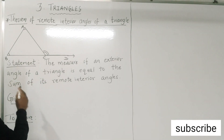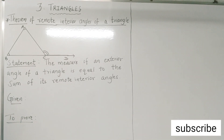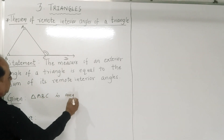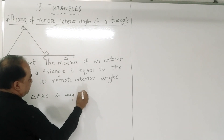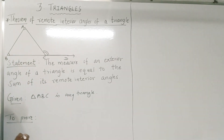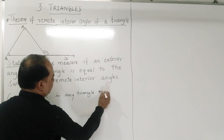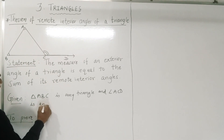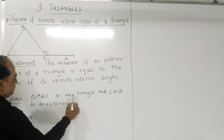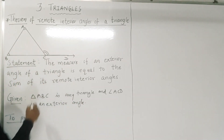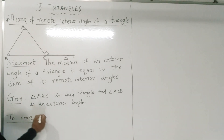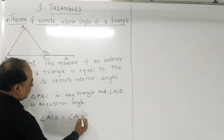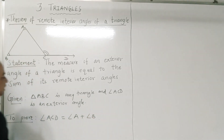The given part is: triangle ABC is any triangle, and angle ACD is an exterior angle of triangle ABC. We have to prove that angle ACD is equal to the sum of the remote interior angles — angle A plus angle B. This is what we have to prove.